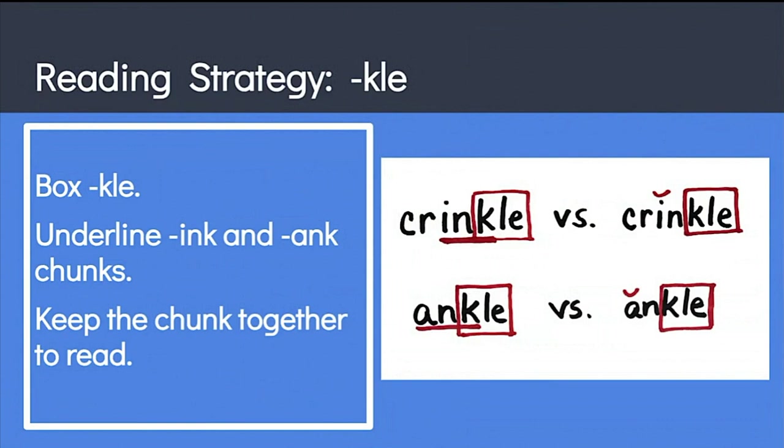Now if a child doesn't keep the INK or ANK together as one chunk, she might read the words as crinkle and ankle. And if this happens, just guide the child by saying, do you see something from your first chart that we keep together as one chunk? That's right, we keep INK together as one chunk. Or we keep ANK together as one chunk. Then have them underline the NK chunk and read the word again.